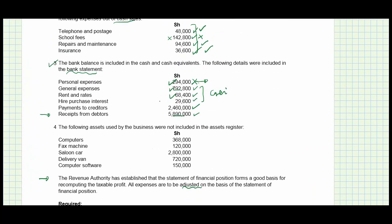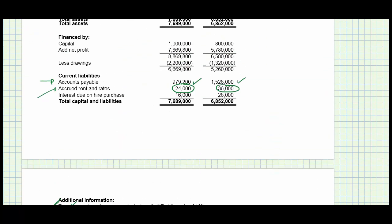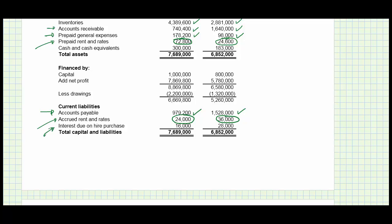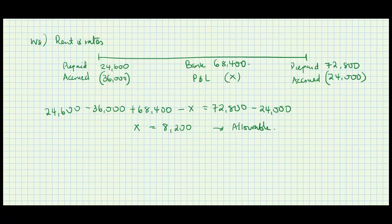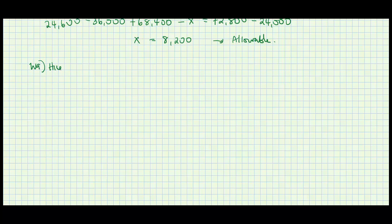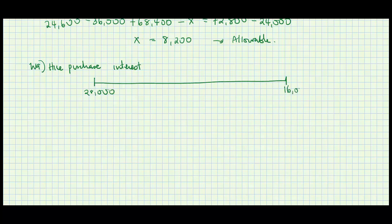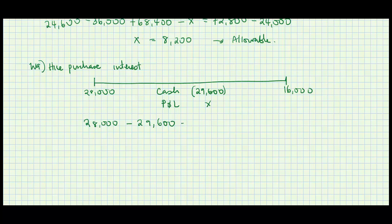Working number nine: hire purchase interest of 29,600. Checking the balance sheet, interest due at the start was 28,000 and at the end was 16,000. Timeline: 28,000 minus 29,600 plus X equals 16,000. Solving gives X equals 17,600 — allowable.